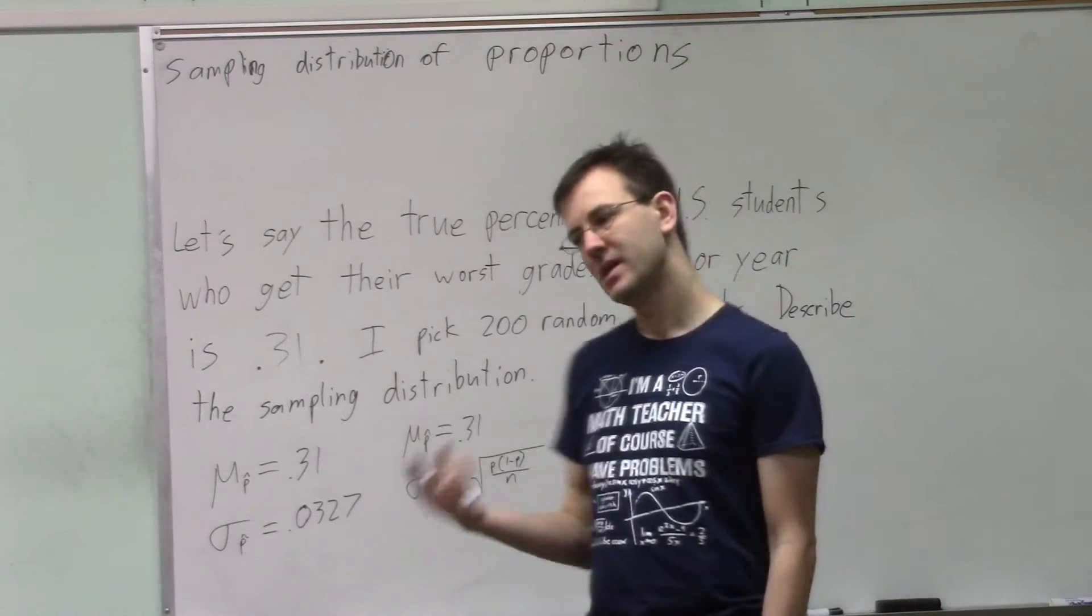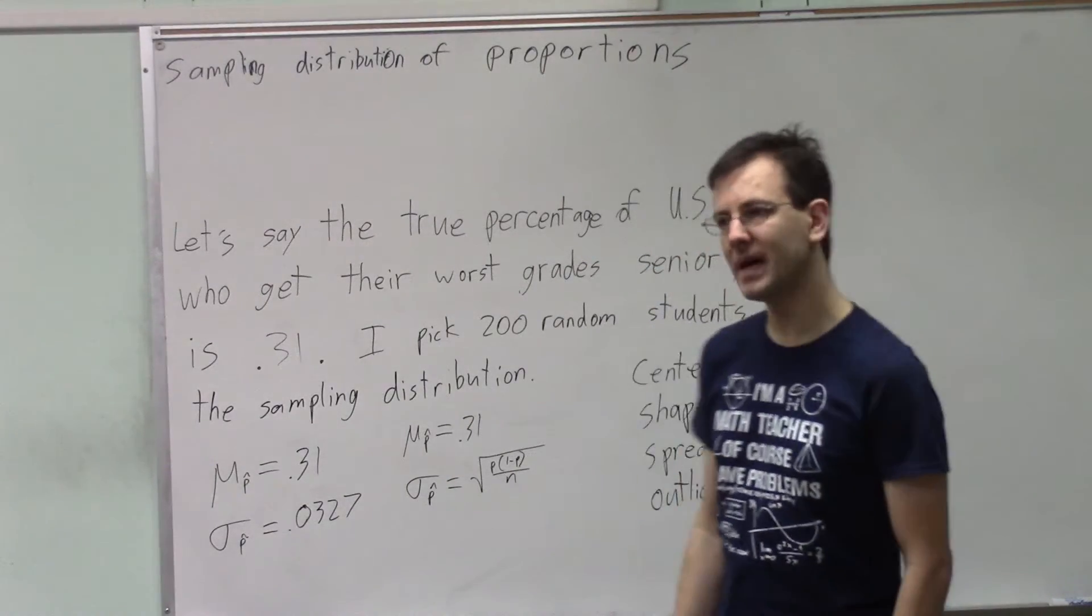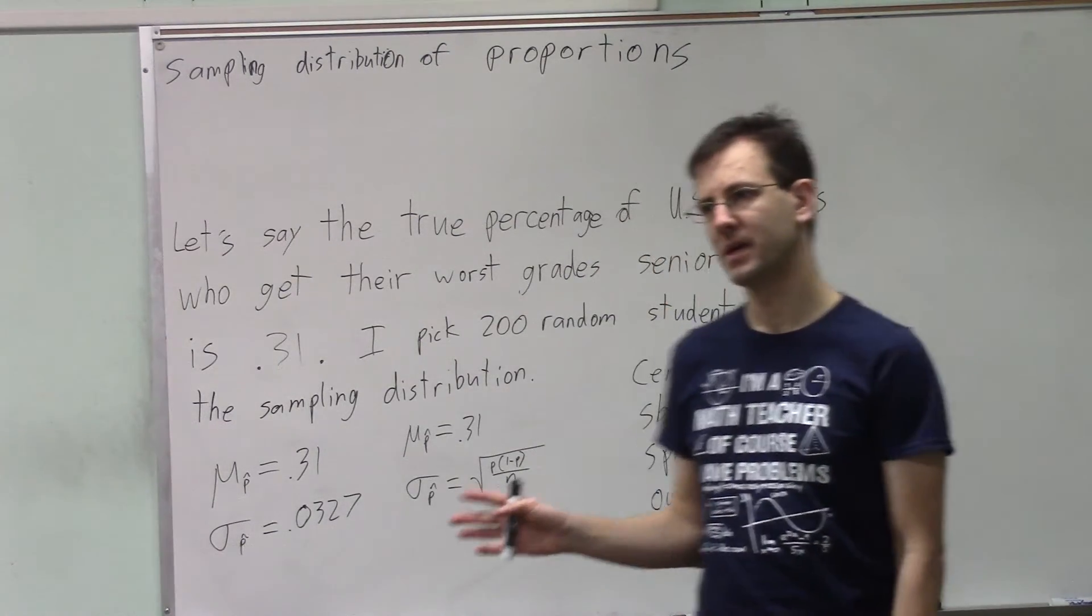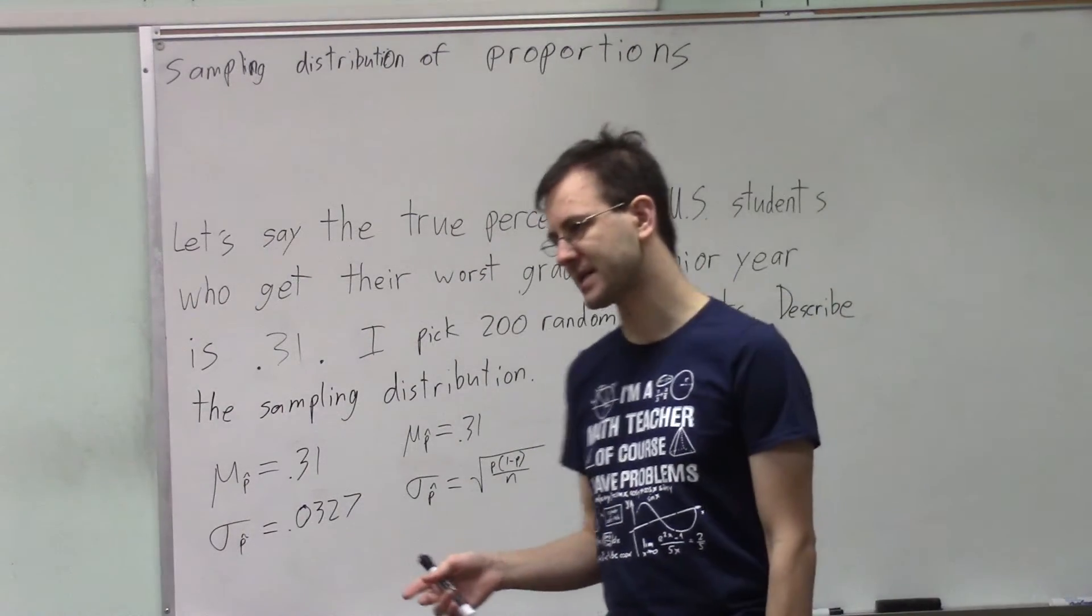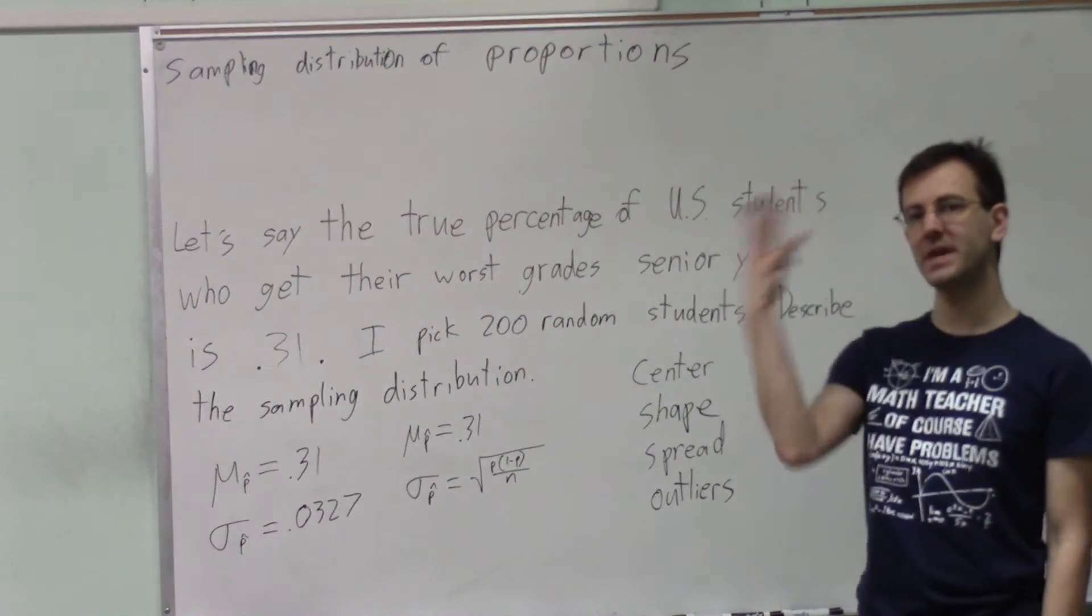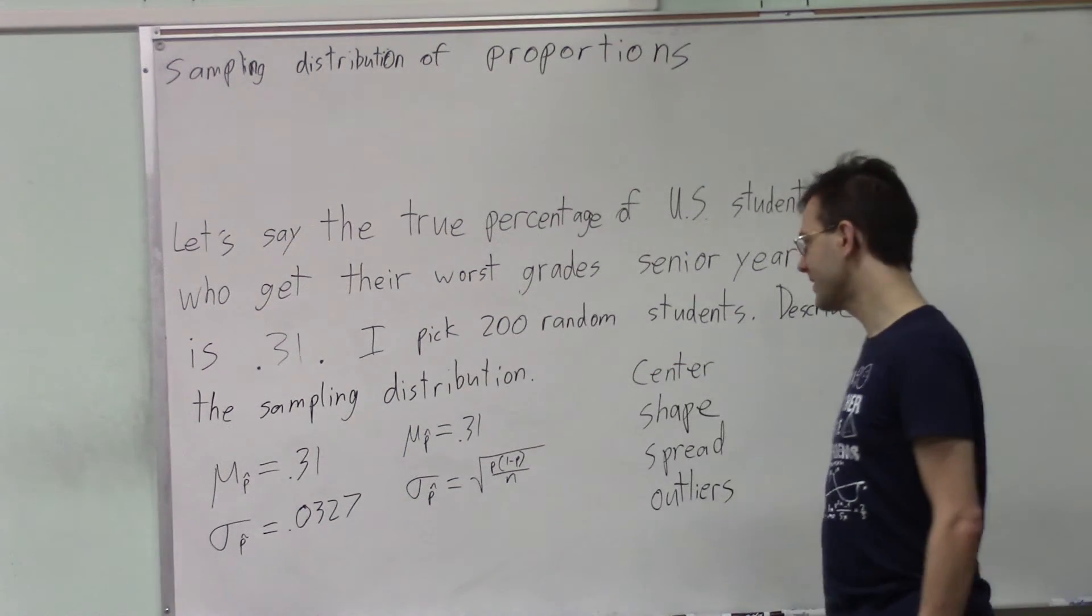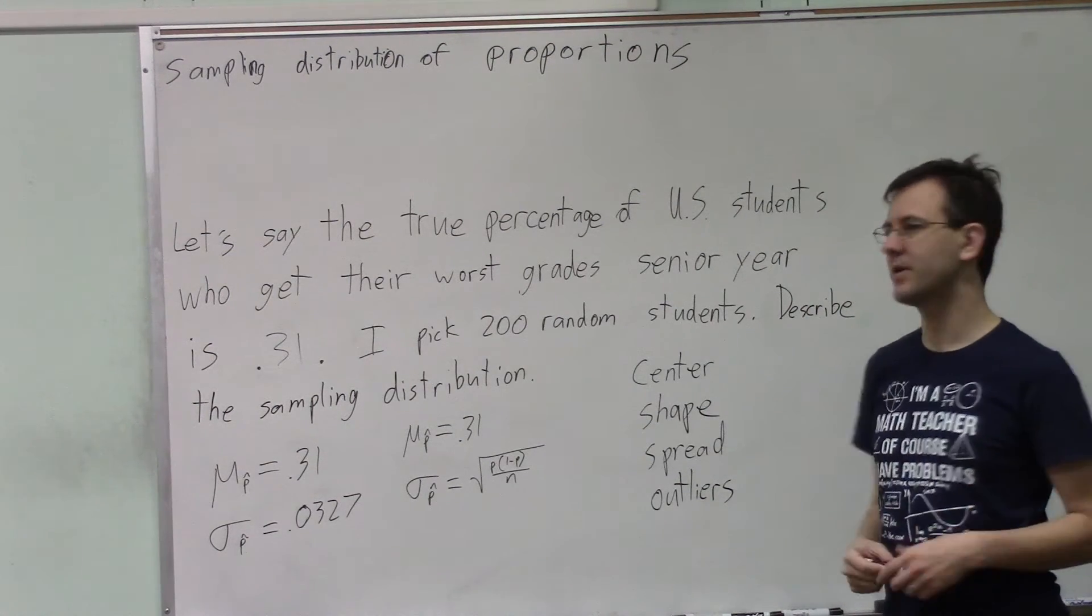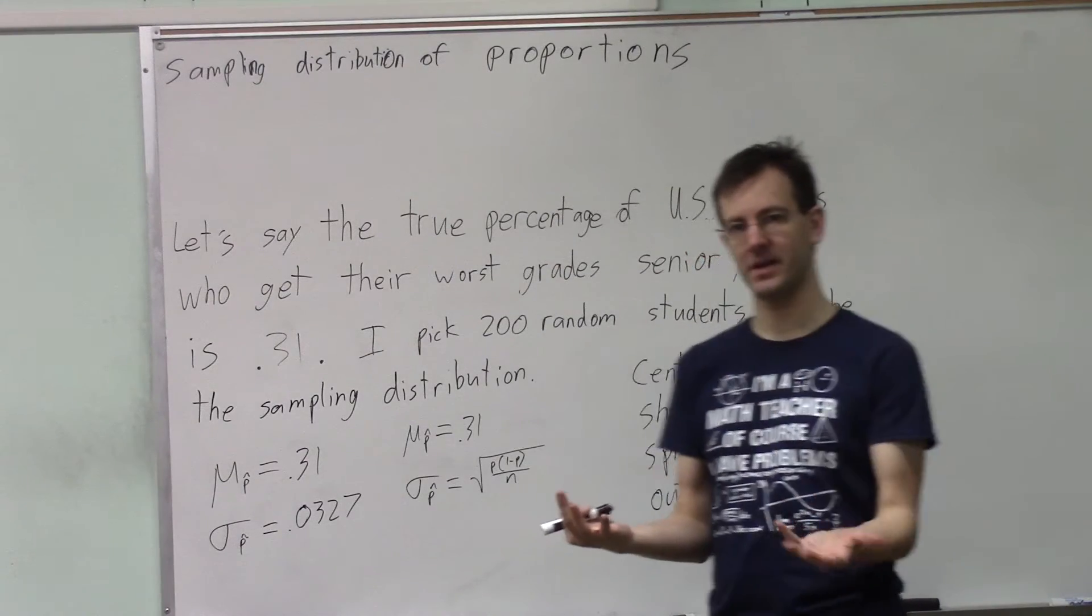Well, it could be skewed, but is it? Well, if the sample is large enough, it's normal, right? We discovered that at the end of chapter 6, that if the binomial distribution sample is big enough, and this is a pretty big sample, then the distribution is shaped normally. So what was necessary? Well, first of all, you have to get 10 successes and 10 failures.